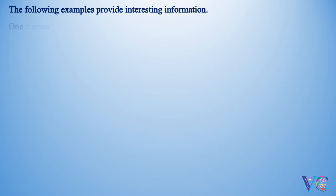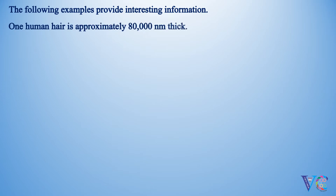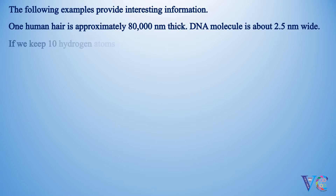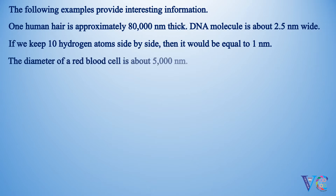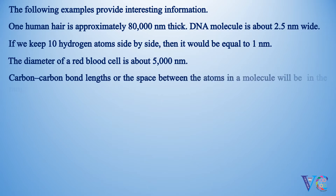One human hair is approximately 80,000 nanometers thick. A DNA molecule is about 2.5 nanometers wide. If we keep 10 hydrogen atoms side by side, it would be equal to 1 nanometer. The diameter of a red blood cell is about 5,000 nanometers. Carbon-carbon bond lengths, or the space between atoms in a molecule, will be in the range of 0.12 to 0.15 nanometers.